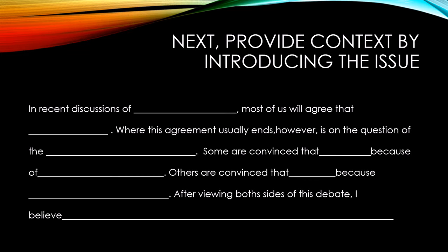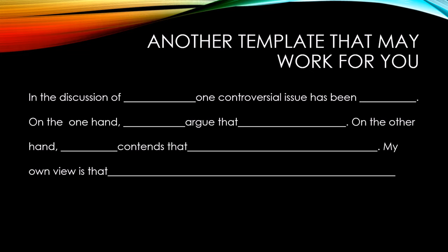Here's another template you could try: 'In the discussion of climate change, one controversial issue has been the Paris Agreement. On the one hand, some argue that... and then on the other hand, others contend that...' — and then you fill in the blanks. 'My own view is that the United States should or should not be part of the Paris Agreement.' After you've created your hook using one of the strategies discussed earlier, you would use one of these two templates to frame your context, your explanation of the debate, and what's at stake. It will also provide your readers with your thesis sentence so they know what kind of argument they're going to be reading.